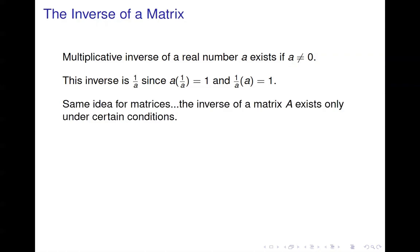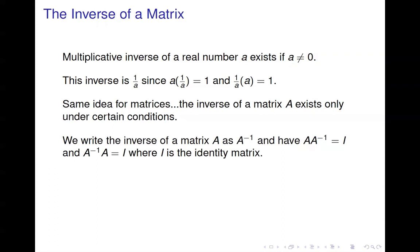We're going to use the same idea for matrices. The inverse of a matrix A exists only under certain conditions, so not every matrix has an inverse, just like not every number has an inverse — zero doesn't have an inverse. We're going to write the inverse of A as A with a superscript negative 1, and we have A times A inverse — we just read this as A inverse — equals the identity matrix. This is not the number 1, this is the identity matrix.